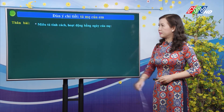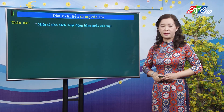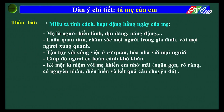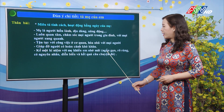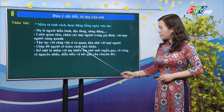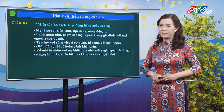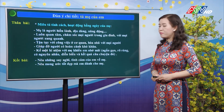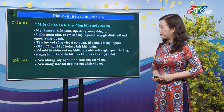Phần tiếp theo của thân bài: miêu tả tính cách và hoạt động hằng ngày của mẹ. Ví dụ: mẹ là người hiền lành, dịu dàng, năng động, luôn quan tâm chăm sóc mọi người trong gia đình và xung quanh, tận tụy với công việc ở cơ quan, hòa nhã với mọi người, giúp đỡ người có hoàn cảnh khó khăn. Các con có thể kể một kỷ niệm với mẹ khiến nhớ nhất — khi kể phải ngắn gọn, rõ ràng, có nguyên nhân, diễn biến và kết quả. Sang phần kết bài: nêu suy nghĩ, tình cảm về mẹ và những mong ước tốt đẹp mà mình dành cho mẹ.